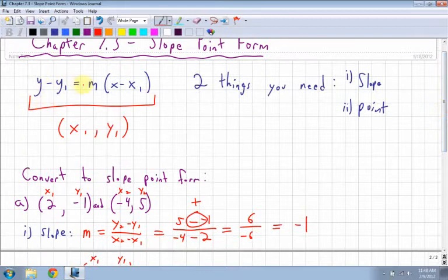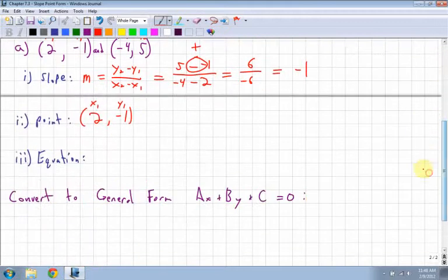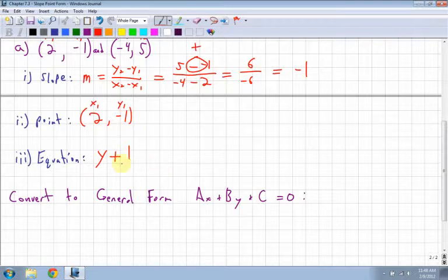y minus y₁ equals m times x minus x₁. So I go down, my equation is going to be y stays y, minus y₁ is negative 1, so this is going to change to a plus 1. I could have put y minus negative 1, but it's the same as y plus 1. Simplify all the time.